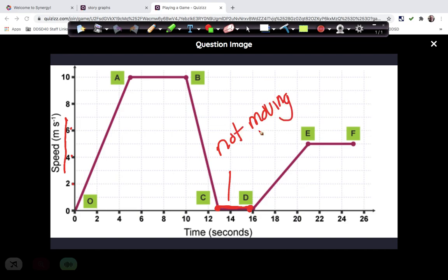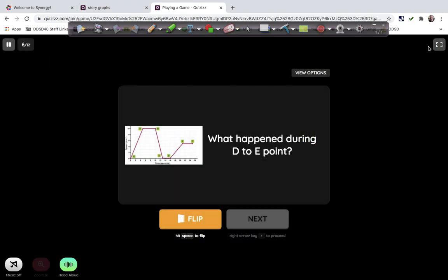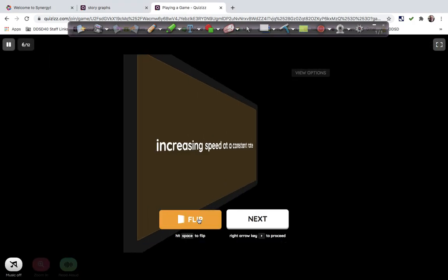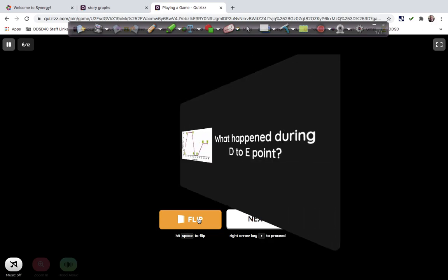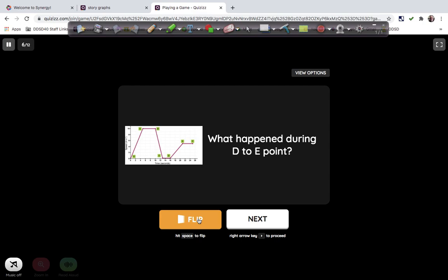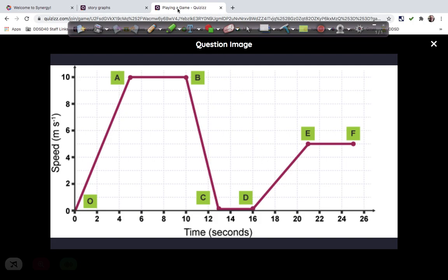Something that's going zero meters per second. Like right now, most likely, unless you're in a car, you are going zero meters per second. You're not moving anywhere. Just like this right here. So let's look at the choices. Increased speed at a constant rate. Okay, so I was looking at the wrong letters. So I'm going to look at it from D to E.